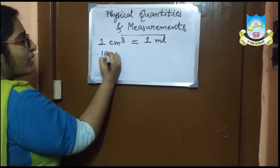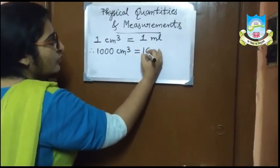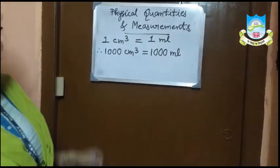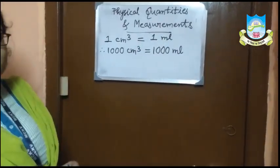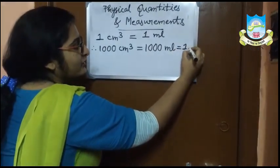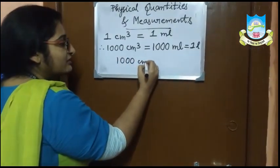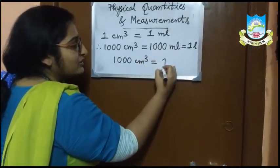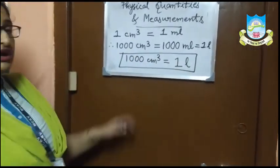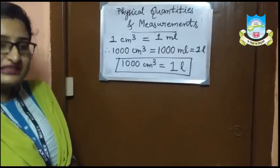Therefore one thousand cubic centimeter equals to one thousand milliliter. We know that one thousand milliliter means one liter. So we must remember that one thousand cubic centimeter equals to one liter. If we have to convert cubic centimeter into liter, we will use this formula.